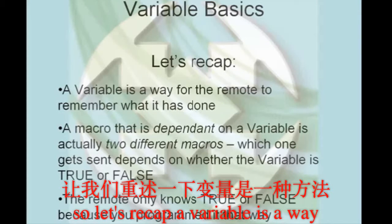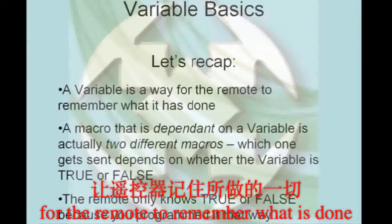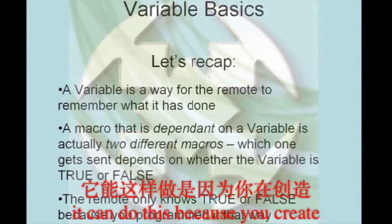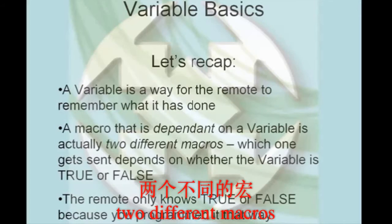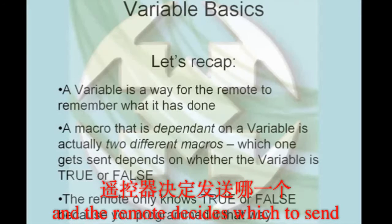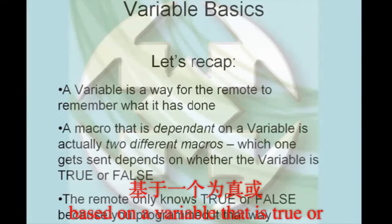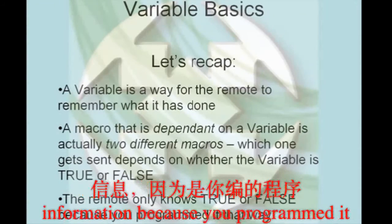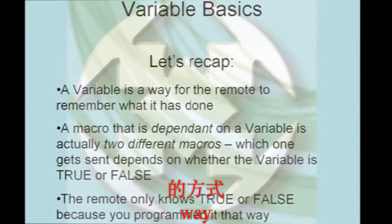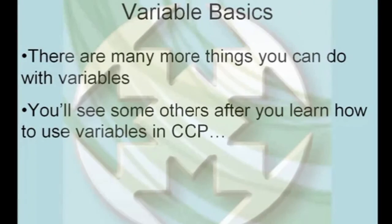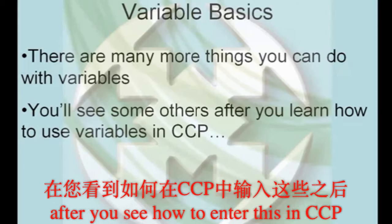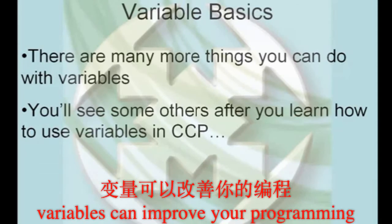So let's recap. A variable is a way for the remote to remember what is done and react accordingly. It can do this because you create two different macros and the remote decides which to send based on a variable that is true or false. The remote can only know this information because you programmed it that way. Please keep in mind that we've only touched on one use for variables. After you see how to enter this in CCP, we'll take a look at a few other ways variables can improve your programming.